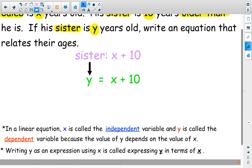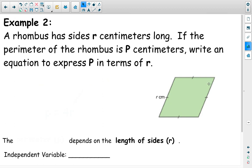Okay, let's try another word problem. Here is example two. A rhombus has sides that are r centimeters long. If the perimeter of the rhombus is p centimeters, write an equation to represent p in terms of r.